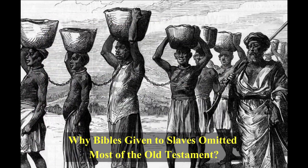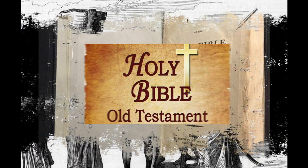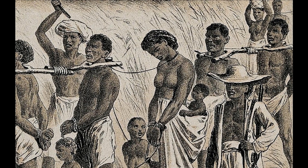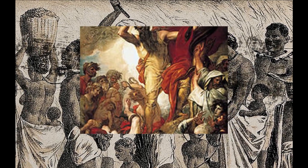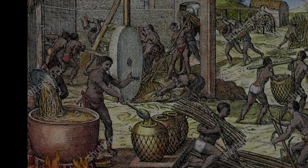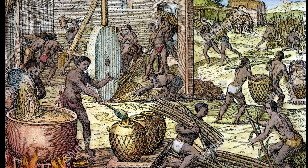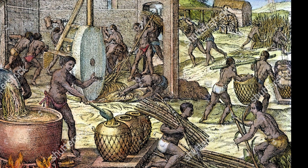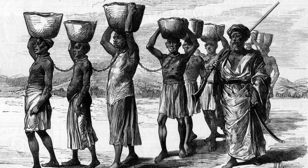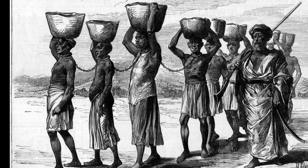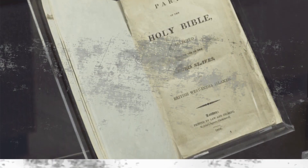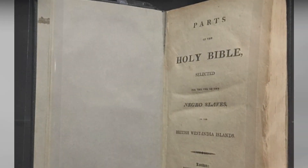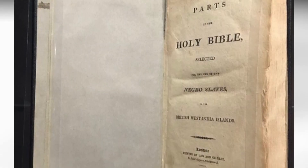The so-called slave Bible told of Joseph's enslavement, but left out the parts where Moses led the Israelites to freedom. When slavery was legal, its proponents often justified it with the Bible, specifically a verse that tells servants to obey their masters. There were also many verses that abolitionists could and did use to argue against slavery — but you wouldn't find those in the heavily redacted slave Bible. Most of the Old Testament is missing, and only about half of the New Testament remains.